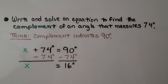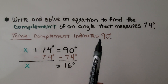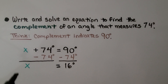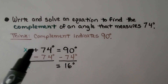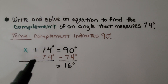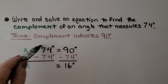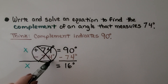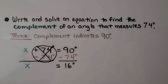Write and solve an equation to find the complement of an angle that measures 74 degrees. Complement indicates a 90 degree angle. They've given us 74 degrees, and the entire thing is 90 degrees. So we write x plus 74 degrees equals 90 degrees. We use the inverse operation and subtract 74 from both sides. That creates a zero pair and eliminates the plus 74. We take away 74 from 90 and get 16 degrees. The other angle is 16 degrees.